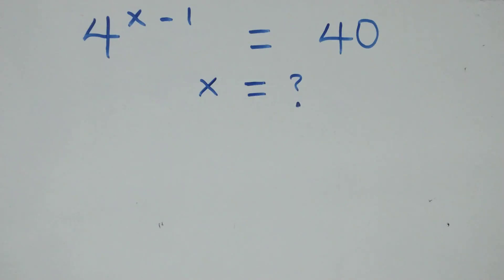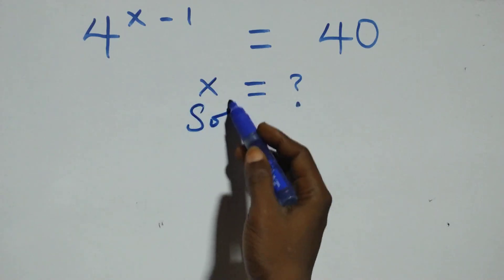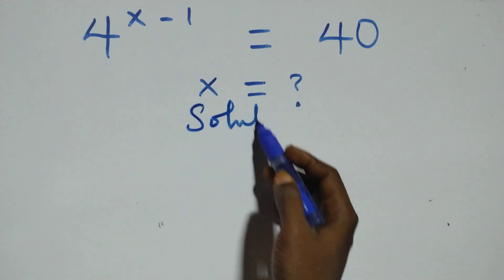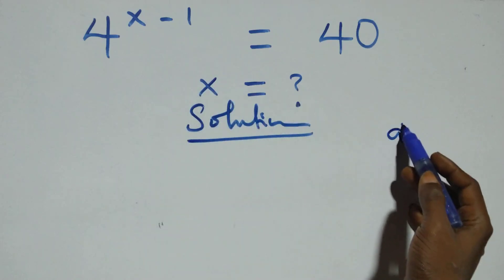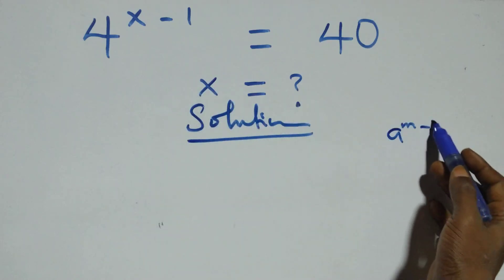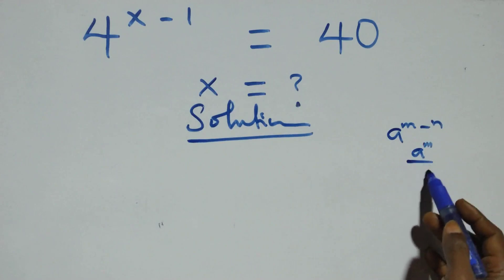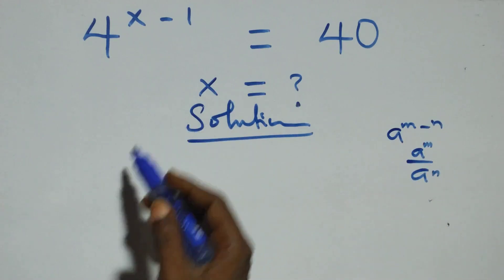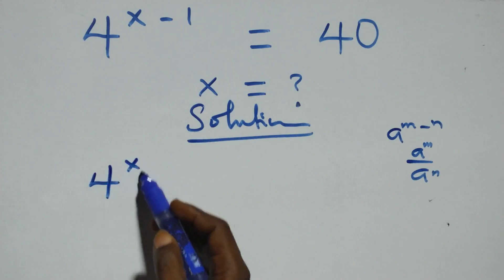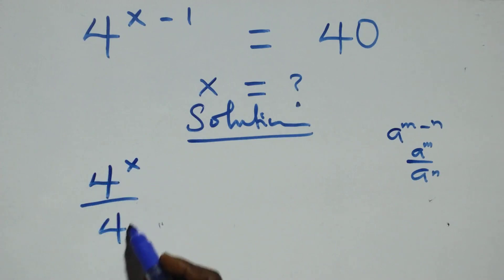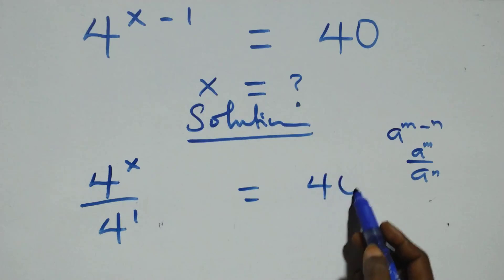Hello, you're welcome. How to solve this nice exponential equation. What we have here follows: when we have e raised to power n minus n, that is the same thing as e raised to power n over e raised to power n. Here we have 4 raised to power x over 4 raised to power 1 equals to 40 on this side.